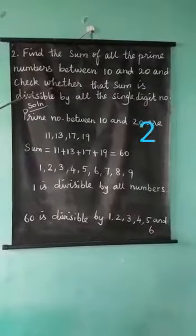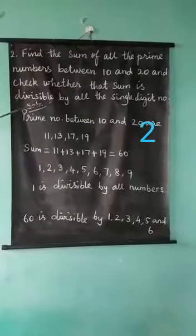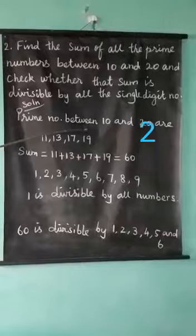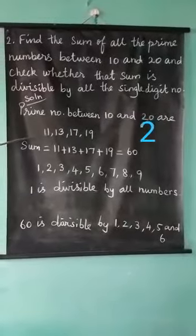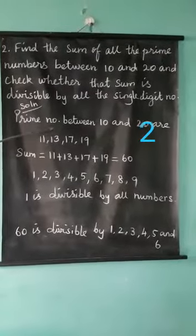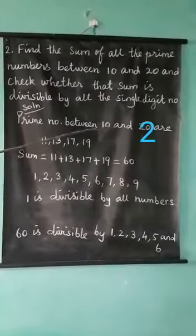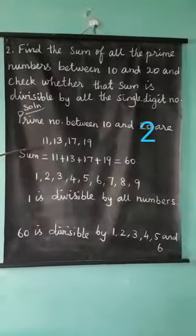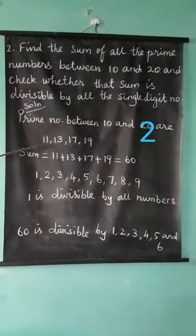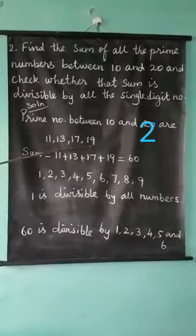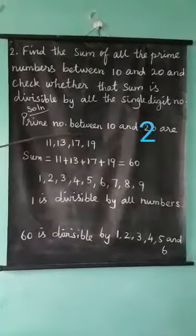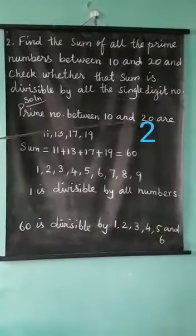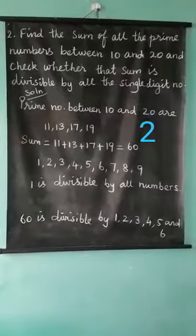First, we find the prime numbers between 10 and 20. Prime numbers between 10 and 20 — note that 10 and 20 themselves are not included. The prime numbers are 11, 13, 17, and 19. These 4 numbers between 10 and 20 are prime numbers.